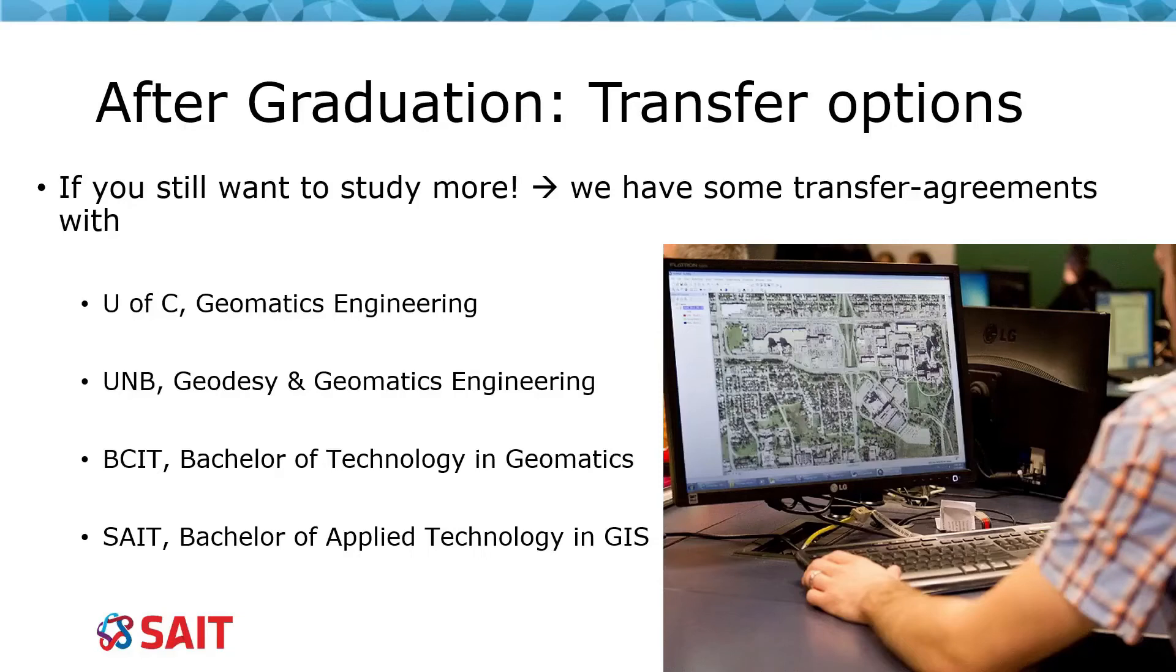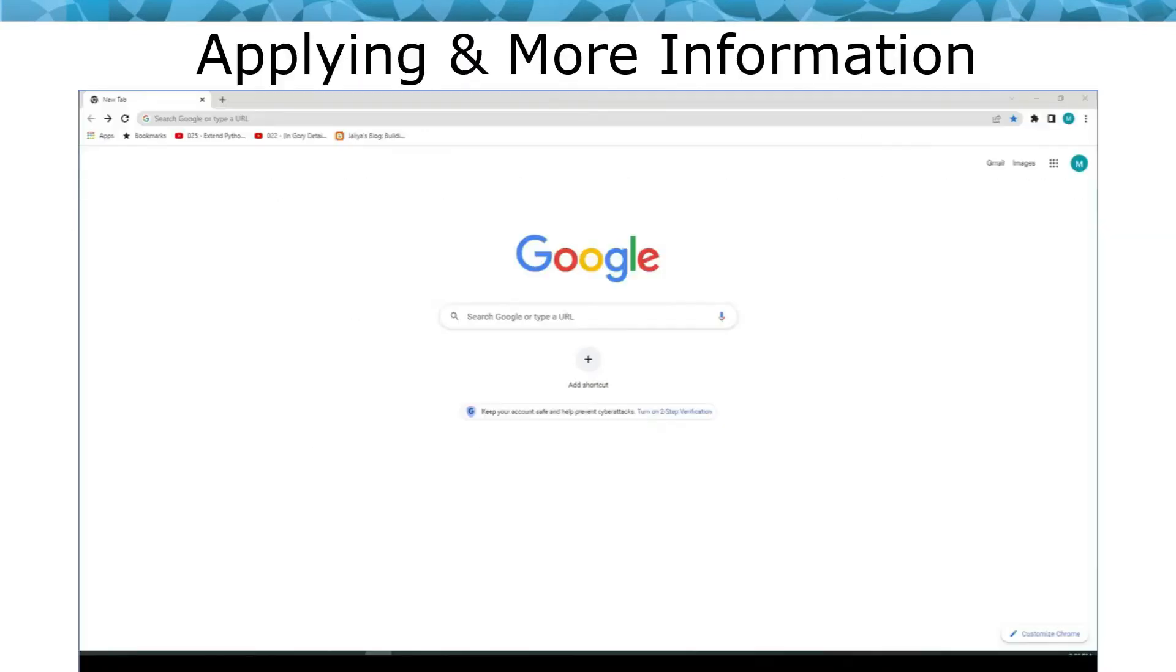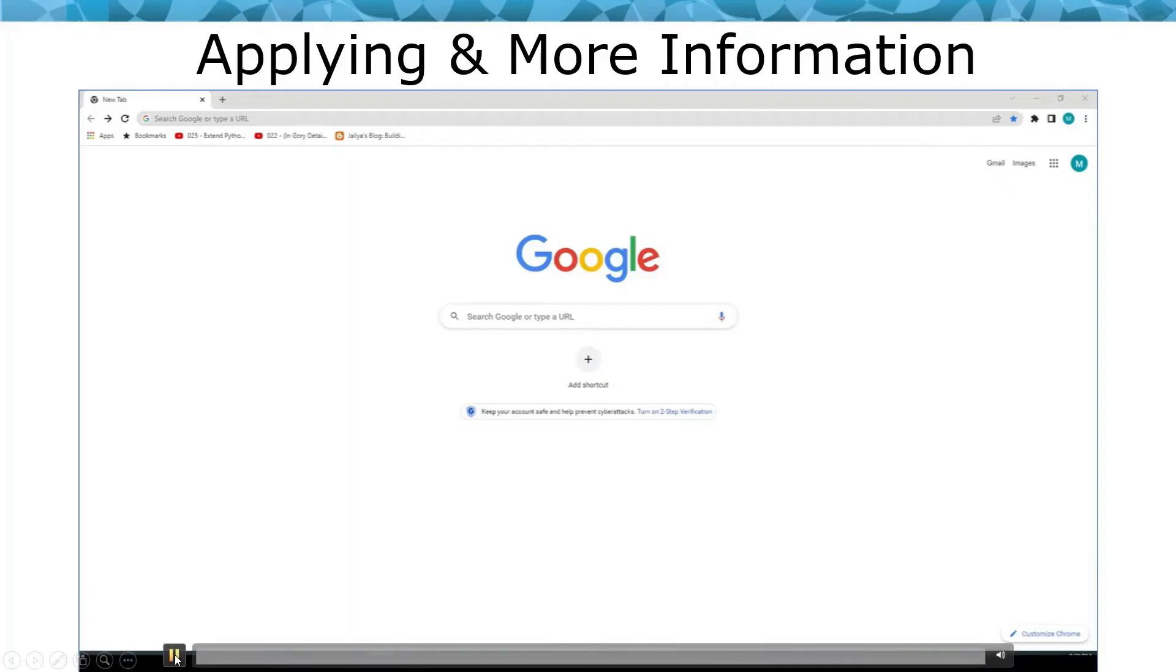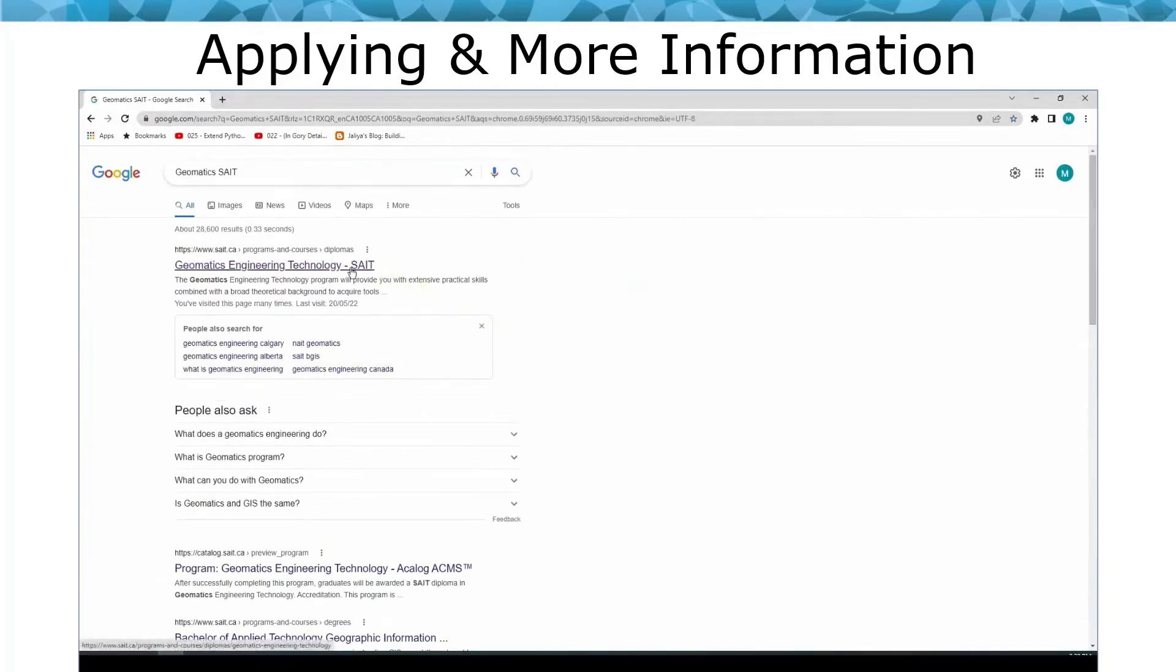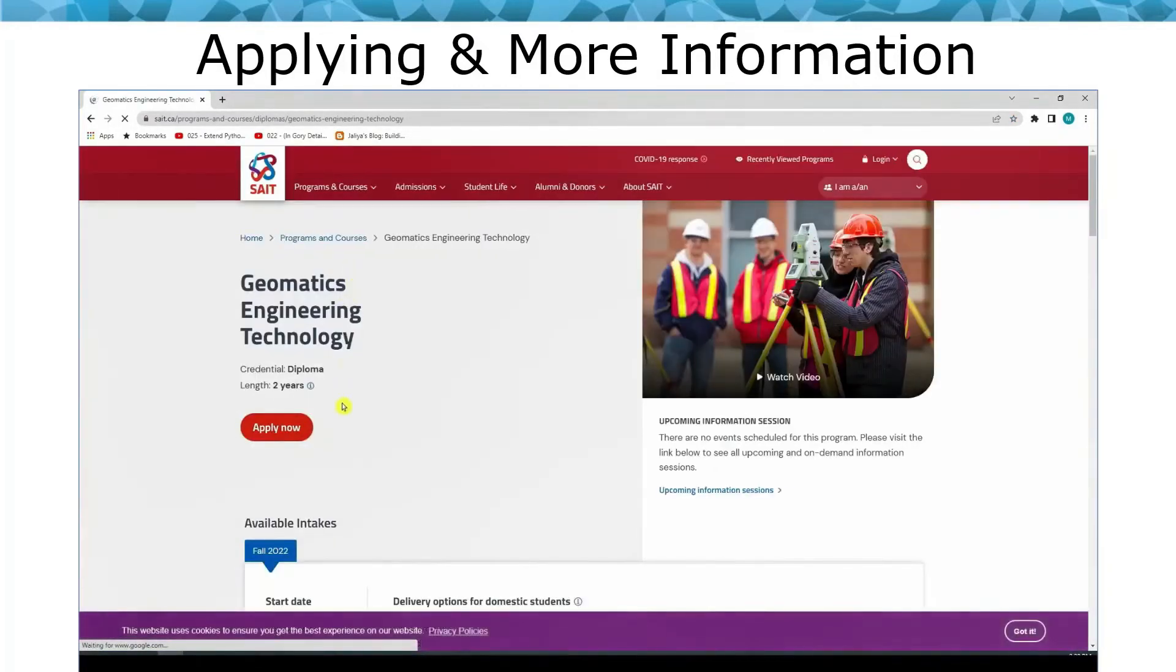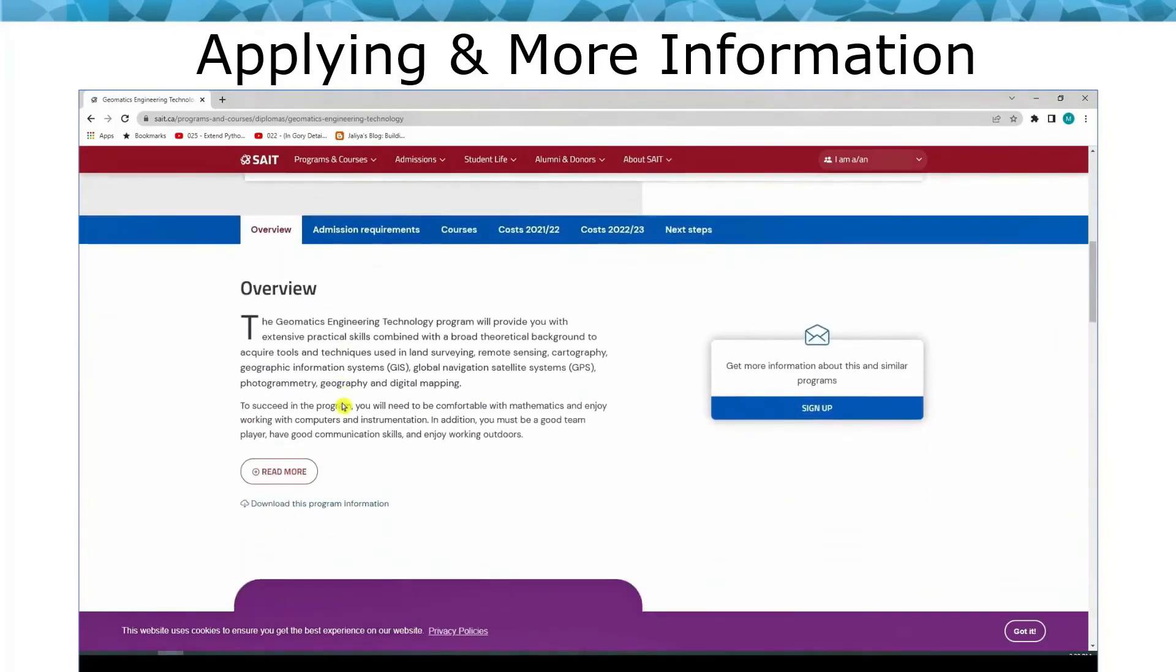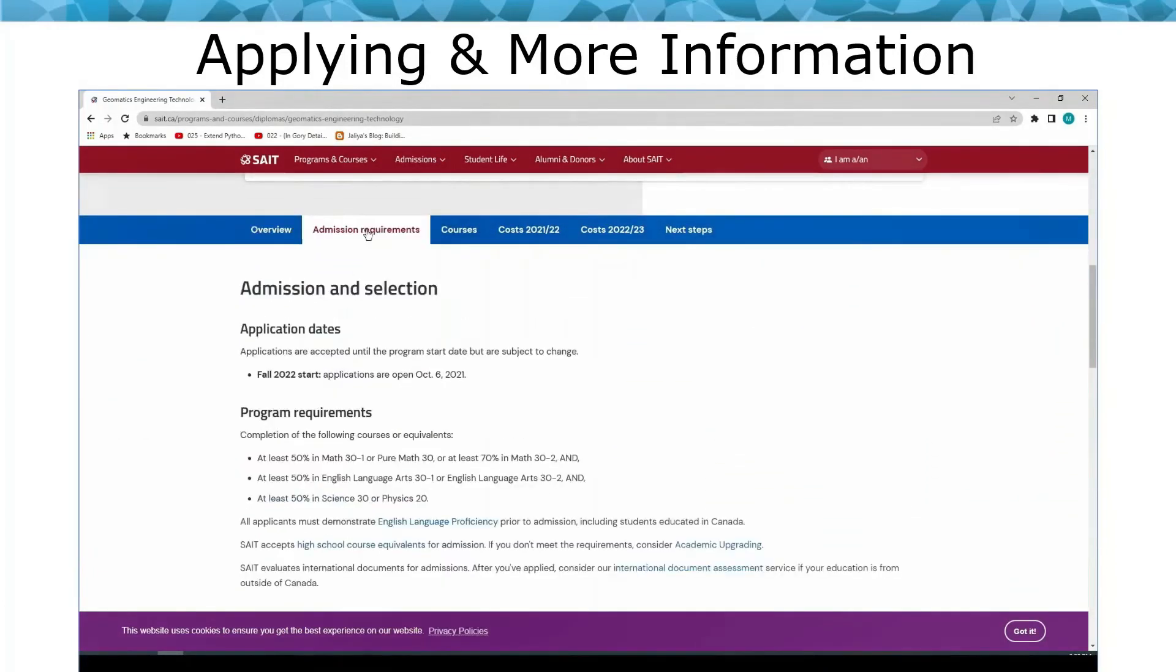In order to apply or to get more information, you need to remember two words: one is geomatics, the other one is SAIT. Type them in any browser, click on the first link, read more about our program, get to know the requirements for admission.